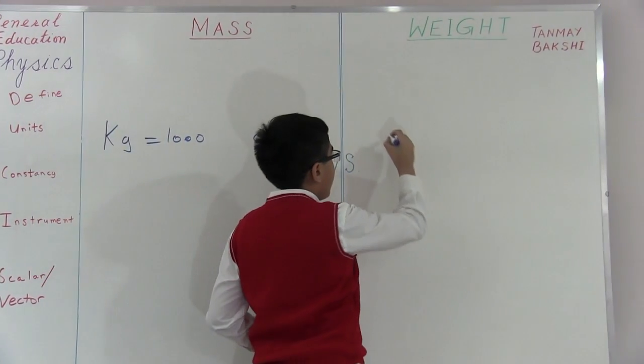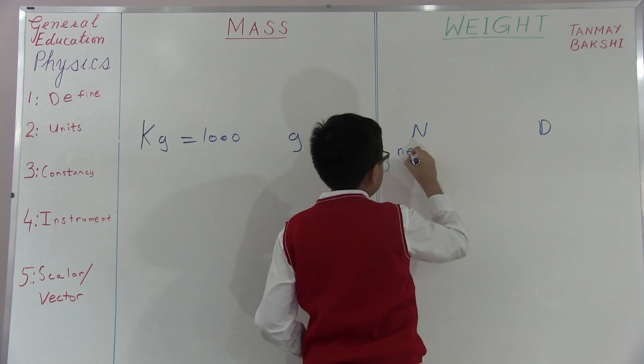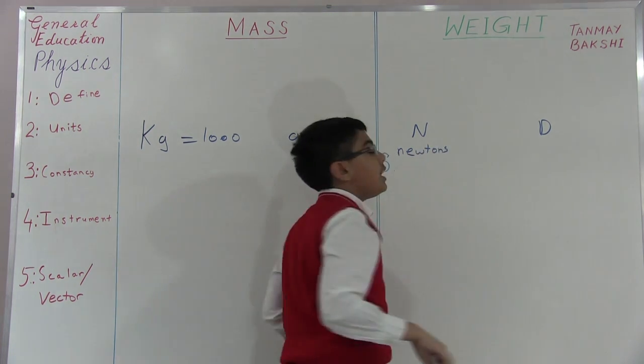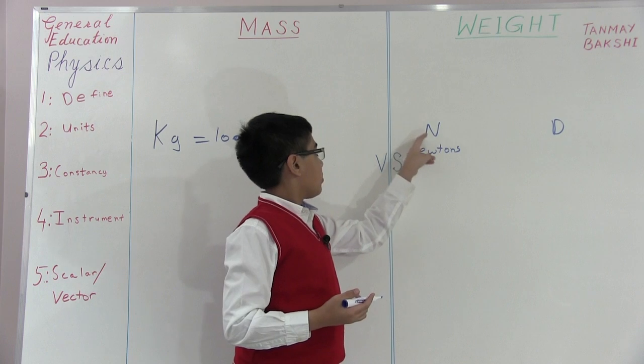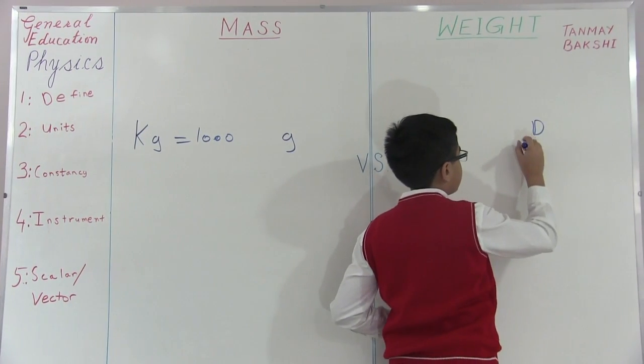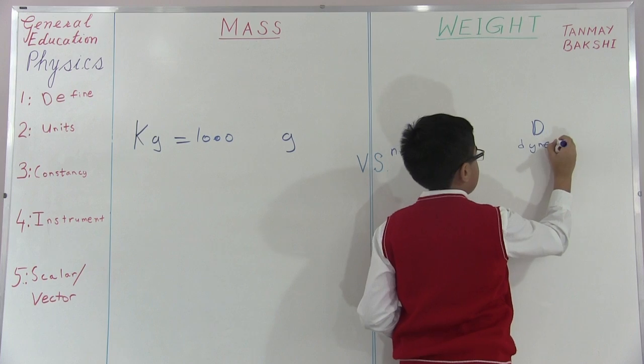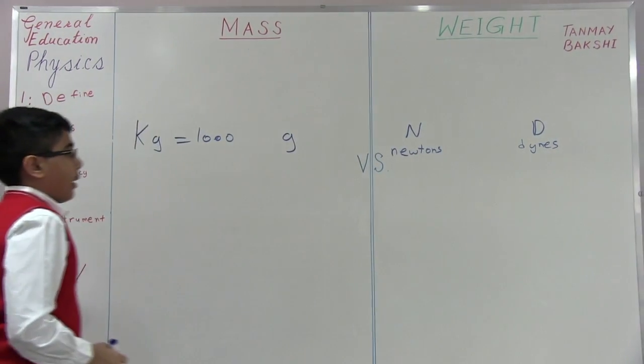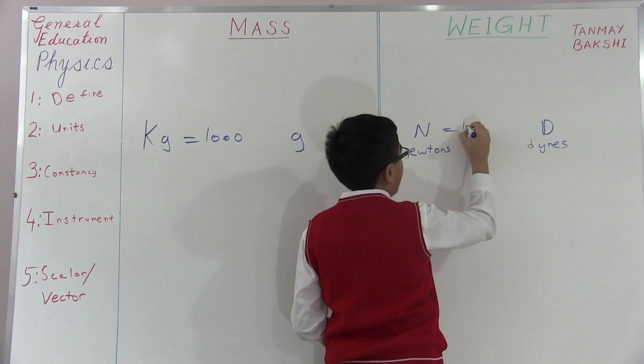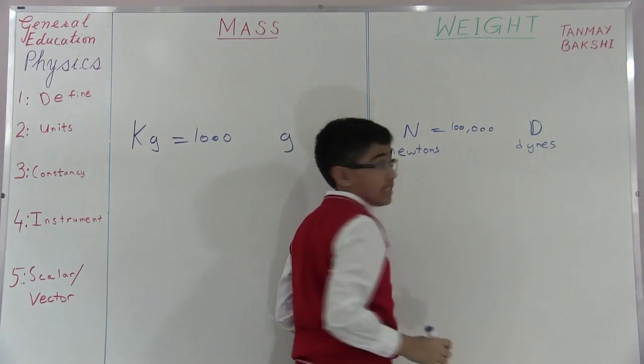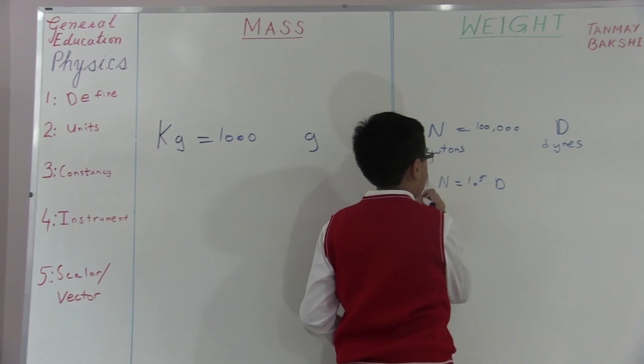And then, for weight, you can use newtons and also dynes. And, of course, you have to spell these completely lowercase, because if you don't, you're referring to the person Sir Isaac Newton, if you have the N capital. But if it's nice and small, then you're referring to the unit. Same thing with dynes. However, it's not just d-i-n-e-s, dines, it's actually d-y-n-e-s. That's how you do that. And also, newtons are equal to 100,000 dynes. Or you could say, 1 newton is equal to 10 to the power of 5 dynes.